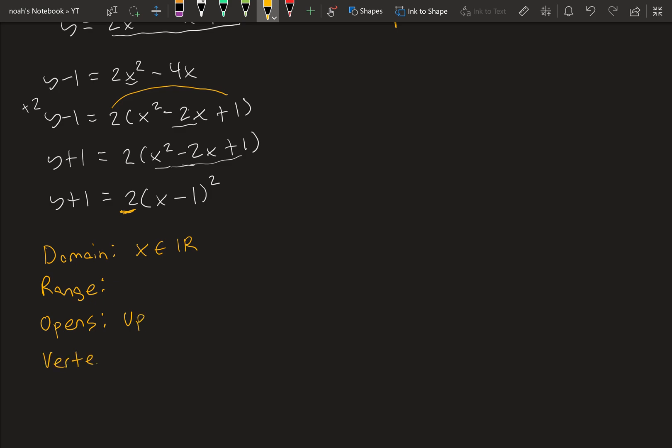Next is the vertex. And this is going to be this value right here. h is negative 1. And we take the opposite of that, which is 1. That's the x value. And then k is plus 1. So we take the opposite, minus 1. That's our vertex, 1 minus 1. And this minus 1 is the minimum value of the function. So we're going to say y is greater than or equal to minus 1. And it's greater than or equal to because it opens upwards.